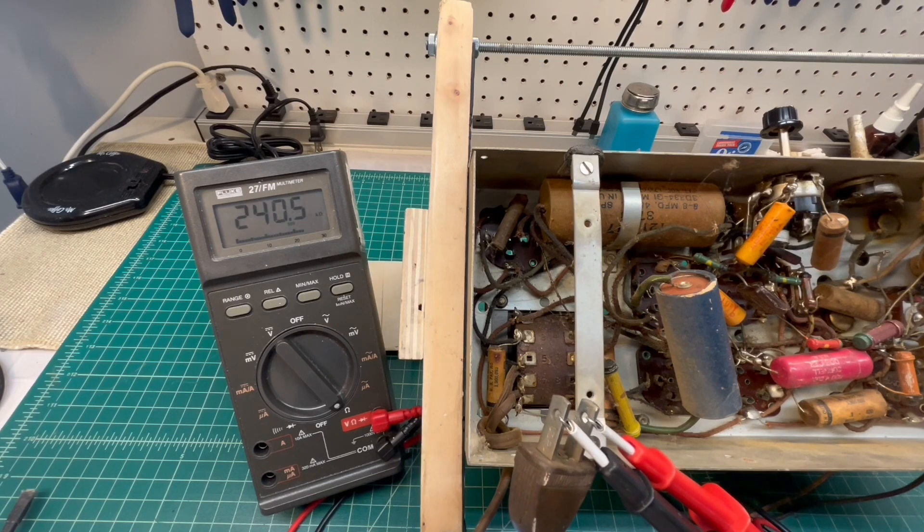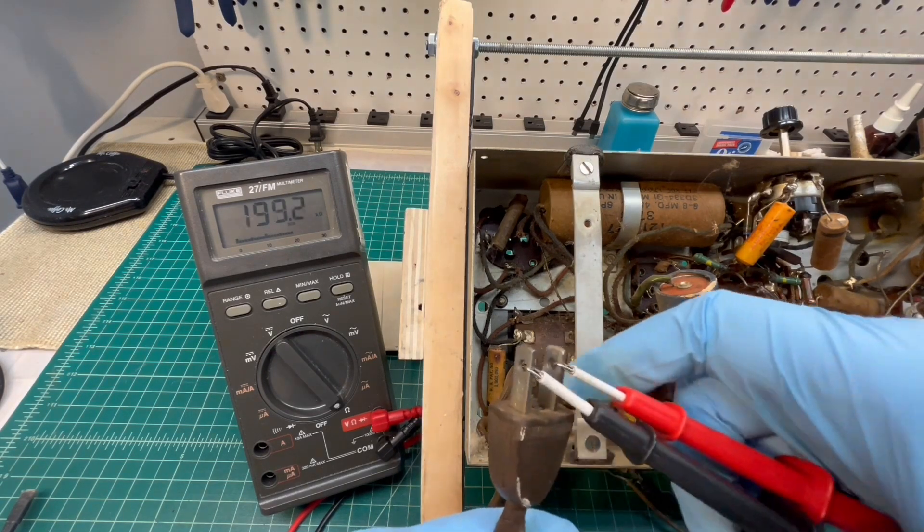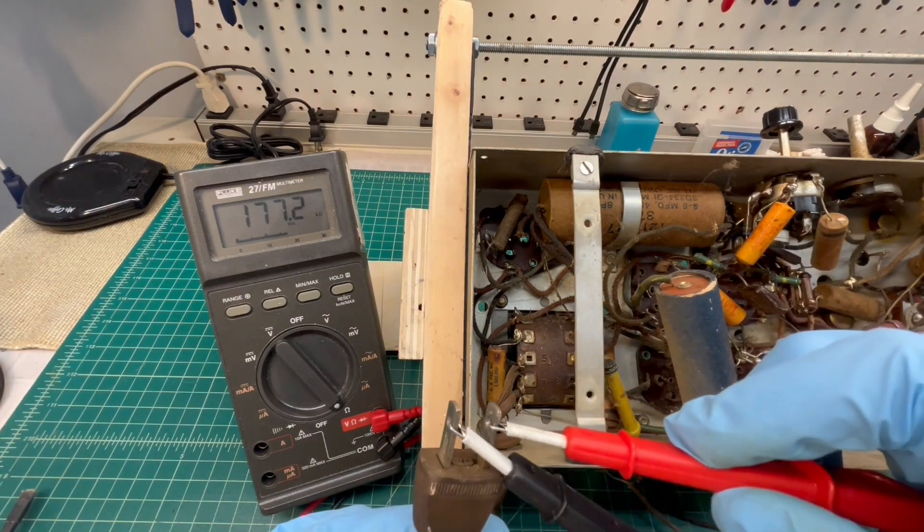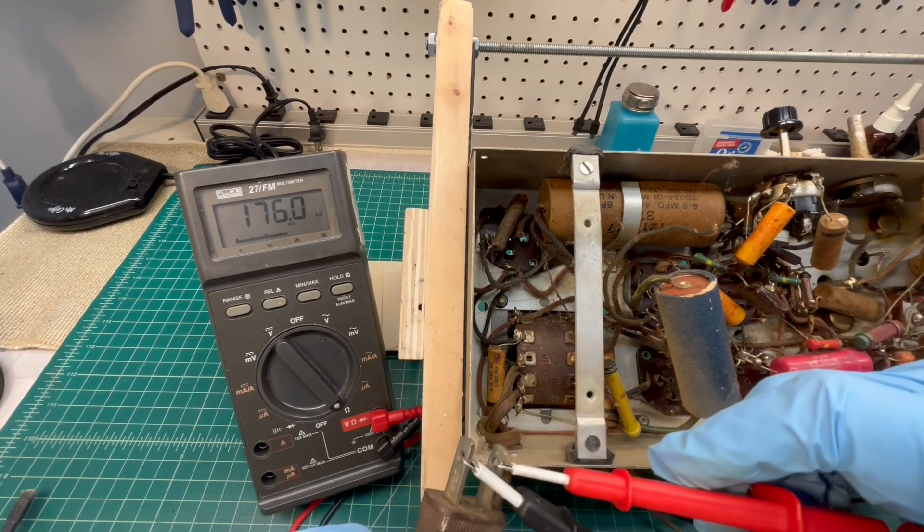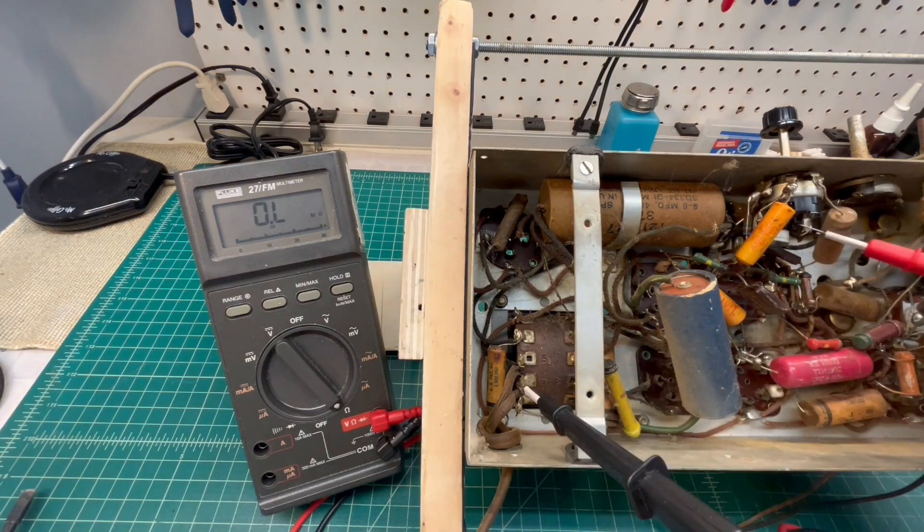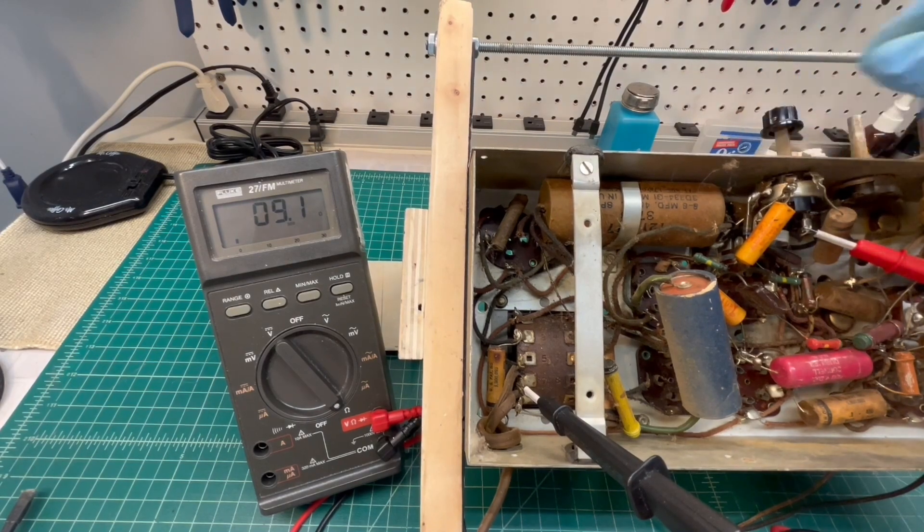So probably the on-off switch itself is dirty and/or defective. Let me bypass the line cord and let's just go to the switch itself and back to the transformer to see what we measure. See, 9 ohms when we're bypassing the switch.